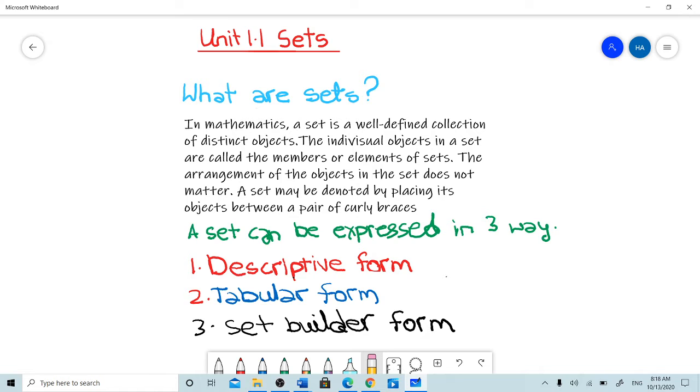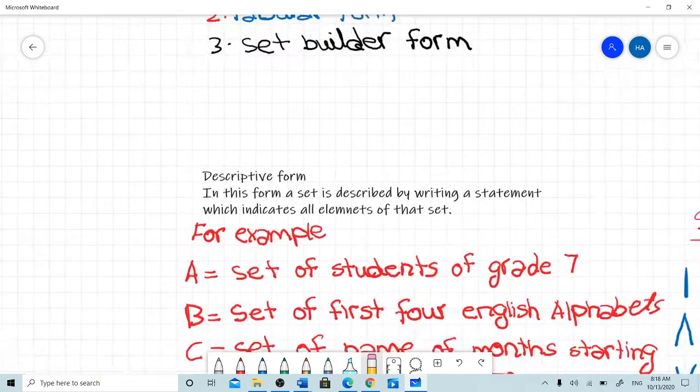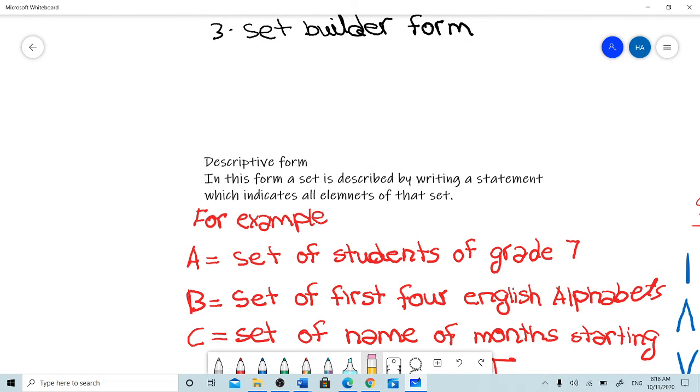A set can be expressed in three ways: the first way is descriptive form, the second is tabular form, and the third is set builder form.